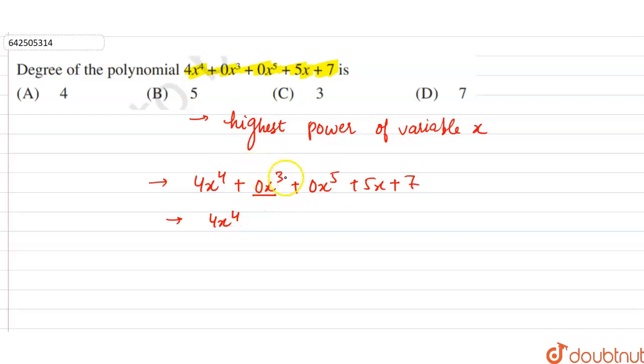0 times x raised to the power 3 means 0 only. Similarly, the 0x^5 term is also 0, giving us 4x^4 + 5x + 7.